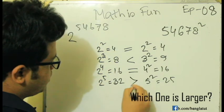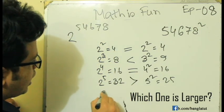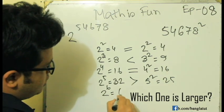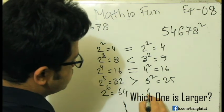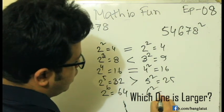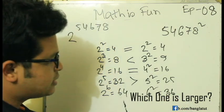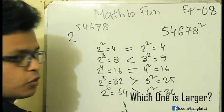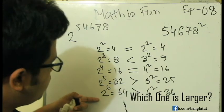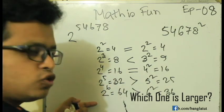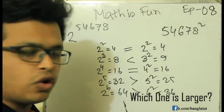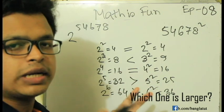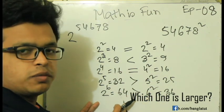I will write 2 minus 5 and 2 minus 6. This gives us 64, and 6 squared equals 36. So 2 to the power 6 equals 64, and 6 squared equals 36.